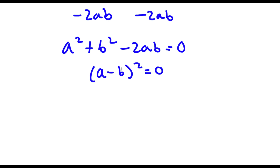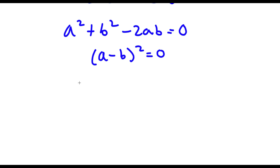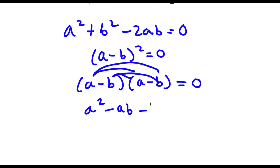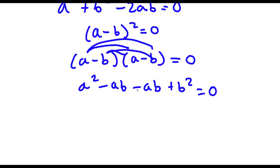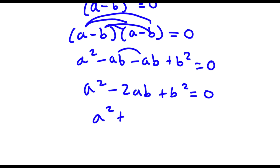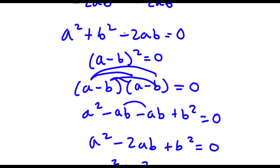Let's verify that this is true by expanding a minus b squared. So a minus b squared is the same as a minus b times a minus b. To solve this, first distribute the a: a times a is a squared, and a times negative b is negative ab. Now distribute the negative b: negative b times a is negative ab, and negative b times negative b is positive b squared. Now negative ab and negative ab are like terms, combining to give negative 2ab. So we get a squared minus 2ab plus b squared is equal to 0, which if rearranged gives a squared plus b squared minus 2ab equals 0. As you can see, these two expressions are equal.